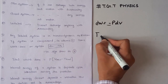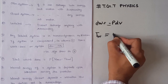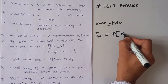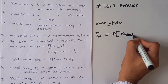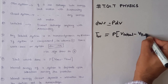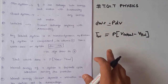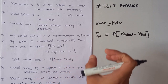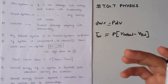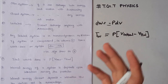The total work done is equal to P into (initial volume minus final volume), that is W = P(V₁ − V₂). These are very important formulas because, on the basis of these formulas, many numerical questions can be asked in the examination.